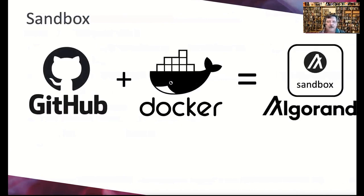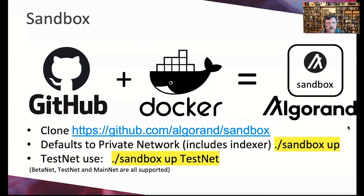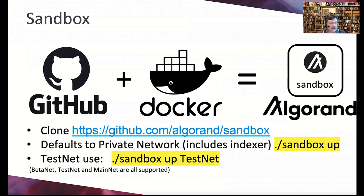You clone the Sandbox repository, install Docker, and start working with Algorand. Sandbox also works on Windows. When you run sandbox up you get the private network with indexer included by default. Add testnet, betanet, or mainnet as a parameter if needed. You might fire up sandbox on mainnet to replicate a problem you're troubleshooting on an account. It's volatile — any time you do a clean, everything goes and you start fresh — and it really is for testing and development purposes only.